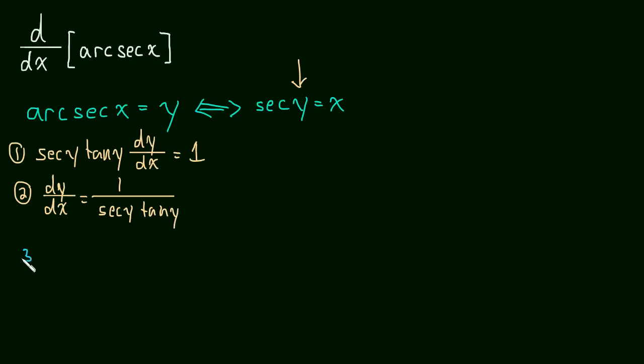And now, well, we know secant y, y is the arc secant of x. So secant of the arc secant, those cancel out, we're just left with x. So this is equal to 1 divided by x times tangent y.